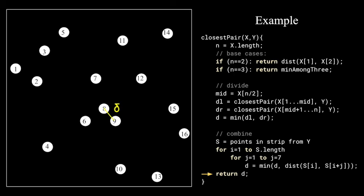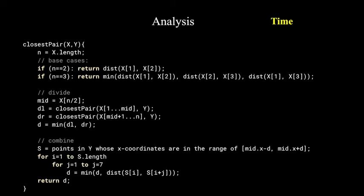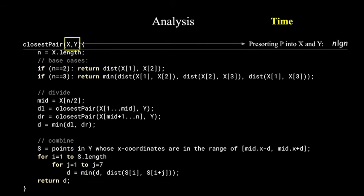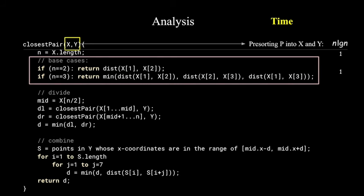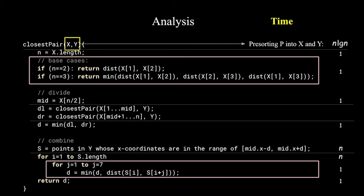Finally, let us look at the complexity analysis of this algorithm. For the pre-sorted arrays, we could use any sorting algorithm that takes n log n time. We then look at the running time for each recursion. It takes constant time to compute n and the base cases. It takes constant time to compute a midpoint. And it takes constant time to find the minimum between DL and DR.